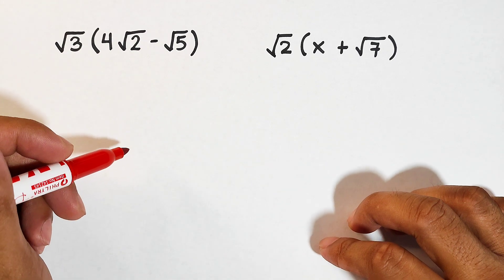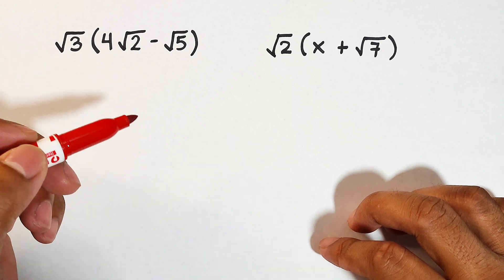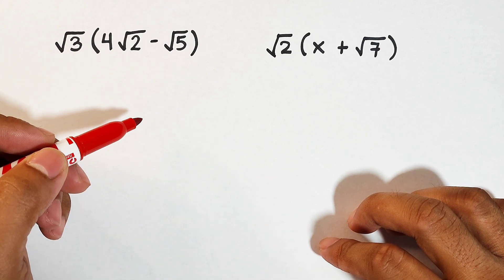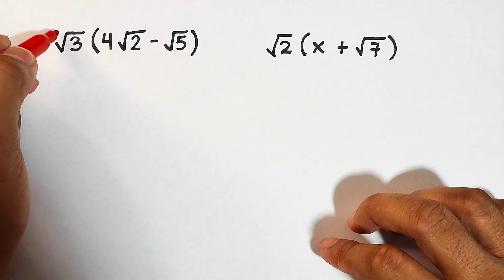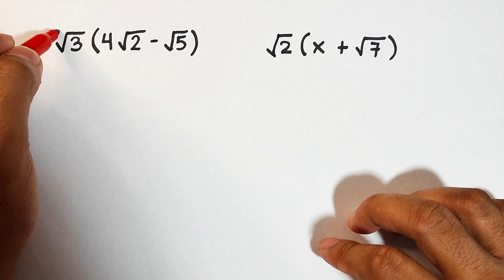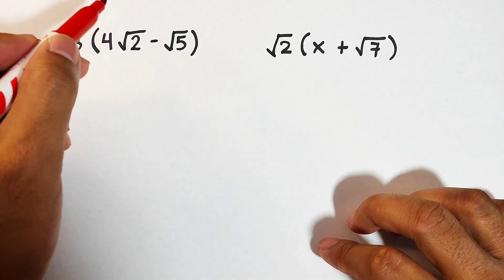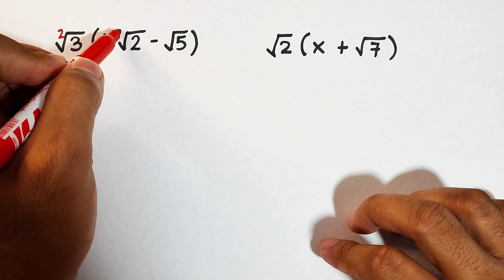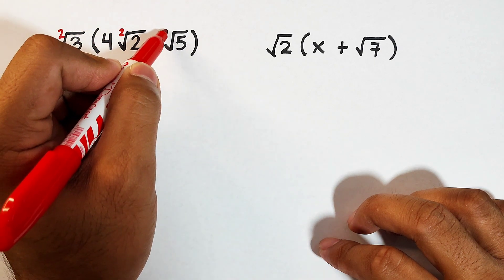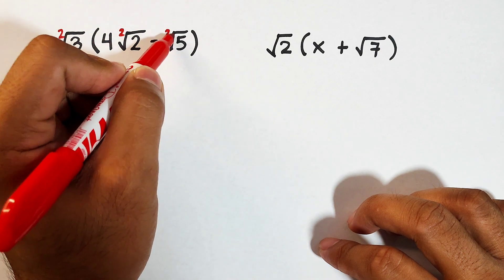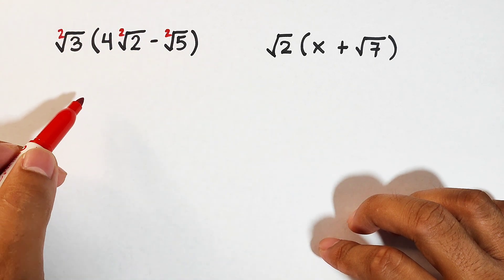We can multiply radicals if they have the same index or indices. Here, the square root of three has an index of two, the square root of two has an index of two, and the square root of five has an index of two. So we can proceed with the multiplication.